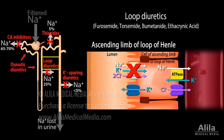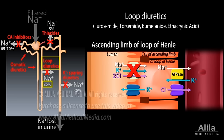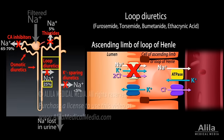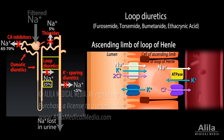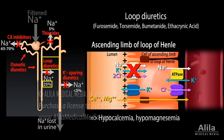Loop diuretics inhibit the sodium-potassium chloride co-transporter in the thick ascending limb of the loop of Henle. These are very powerful diuretics because this transporter not only reabsorbs a large share of sodium, but is also responsible for the osmolarity gradient in the medulla that enables the collecting duct to concentrate urine. As loop diuretics cause the salinity gradient to diminish, the collecting duct loses less water and more water is excreted in urine. Because the sodium-potassium chloride co-transporter acts in conjunction with back diffusion of potassium to create a positive lumen potential that drives reabsorption of other positive ions, its inhibition by loop diuretics also induces a greater loss of these ions.